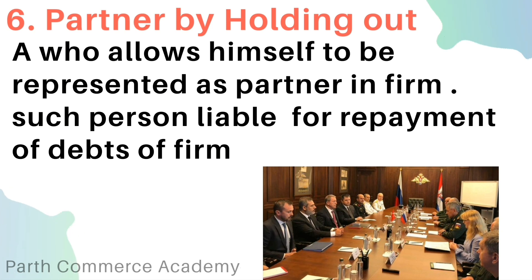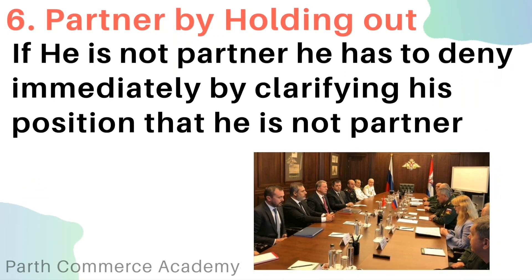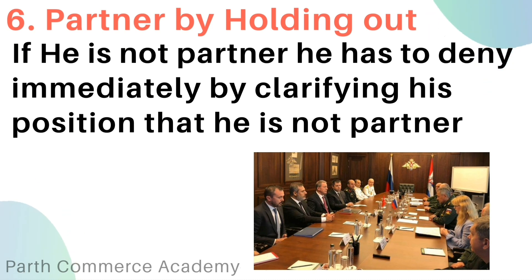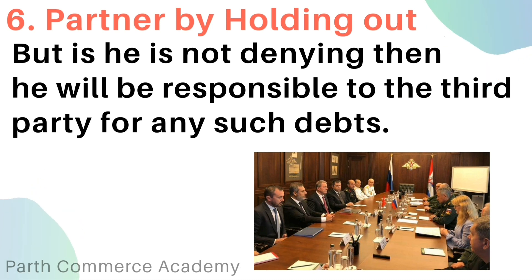Last is partner by holding out. A partner by holding out is a person who allows a firm to use his or her name to be represented as a partner in the firm. Such a person is liable to repay debts created through such representation. If he is not actually a partner, he must deny it immediately by clarifying his position. But if he does not deny it, he will be responsible to the third party for any such debts.